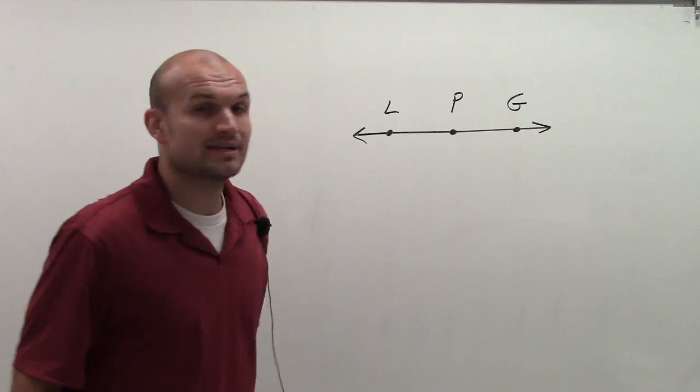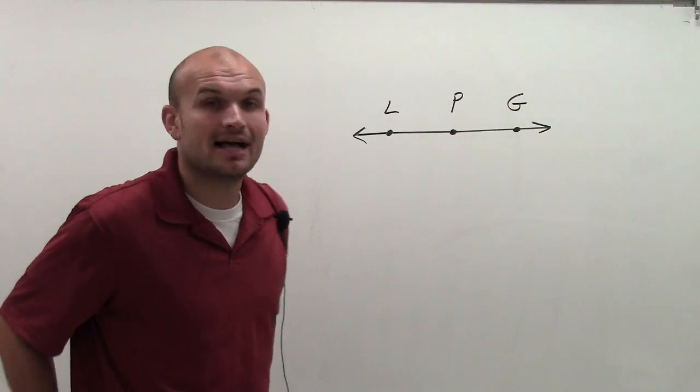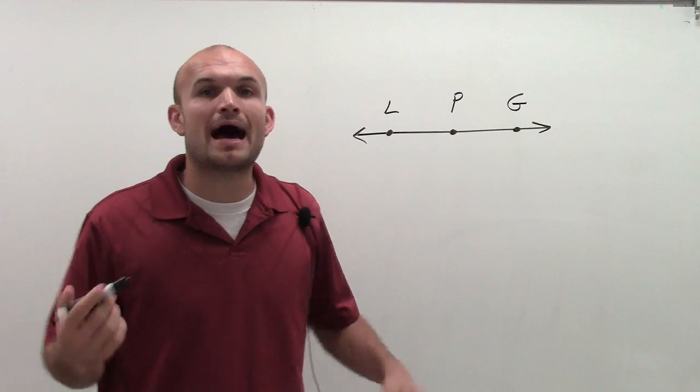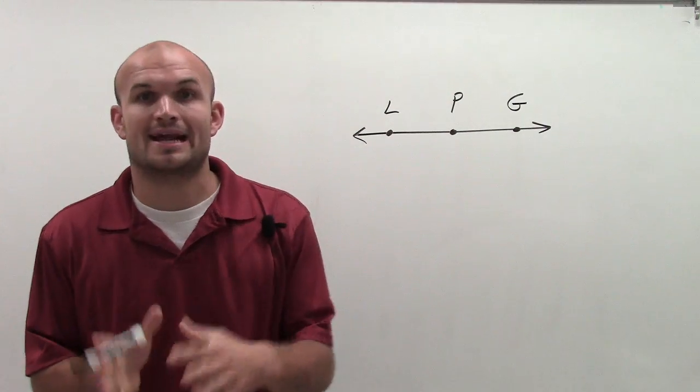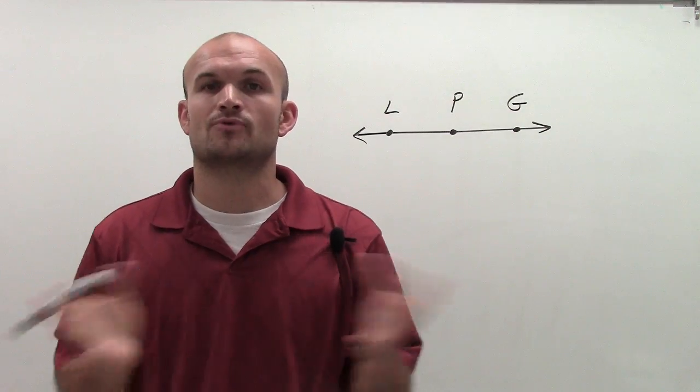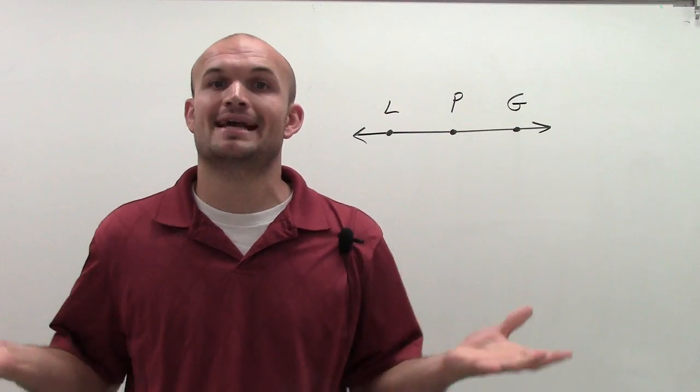Alright, so for this problem, what they want us to do is tell us what the opposite rays are. And remember, opposite rays are two rays that have the same endpoint that when combined together, create a straight line.